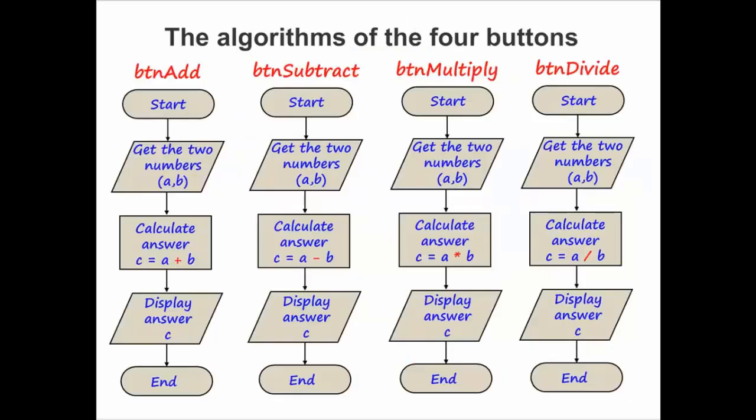In terms of our algorithms for those four buttons, they're basically all very similar with the exception of the process. We're going to add two numbers together. We're going to subtract two. We're going to multiply two. And we're going to divide the second from the first. This makes it really easy to code because I can write my code for one button and then copy and paste it to the other three buttons and just make a few small changes.